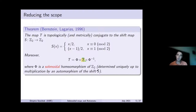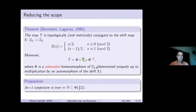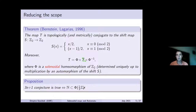This allows us to move the 3n+1 problem into two-adic analysis. We have the solenoidal homeomorphism φ, and we can restate the 3n+1 conjecture: the set of natural numbers is a subset of the image of (1/3)·Z, where Z is a subset of Z2 and you can divide by 3 in the field. So we've essentially moved the complexity of T into the complexity of φ. Now we want to understand what we can do with φ — what does it mean to be solenoidal?